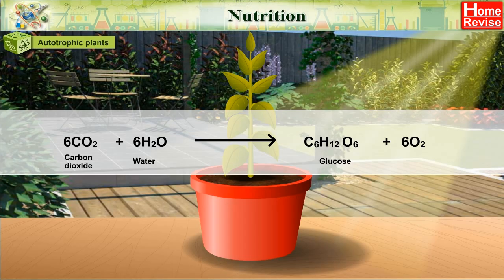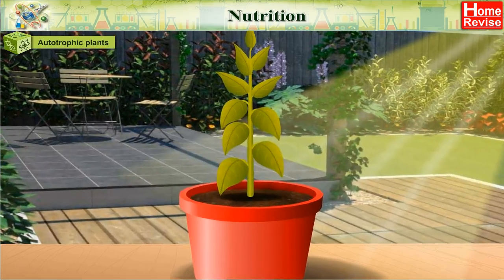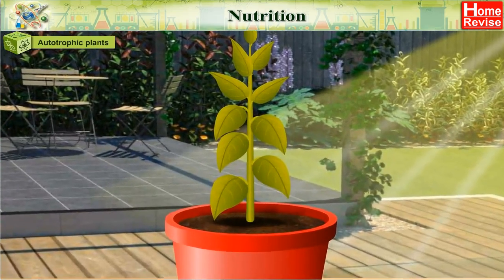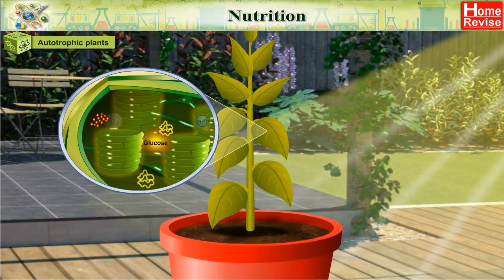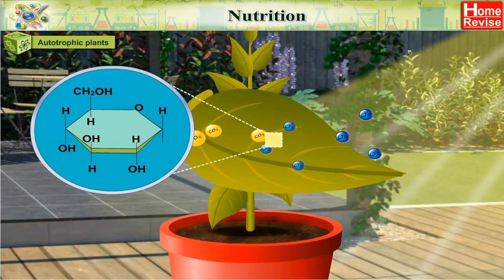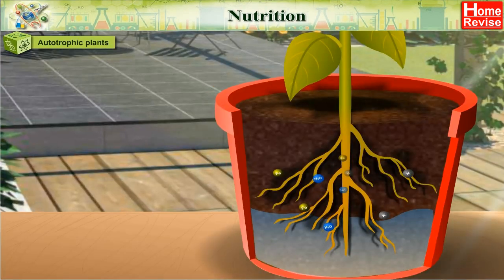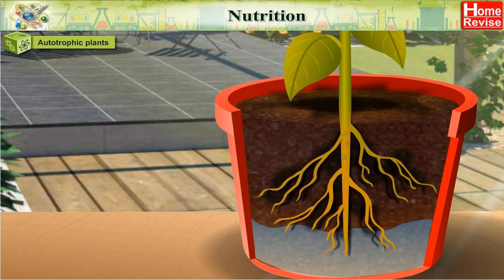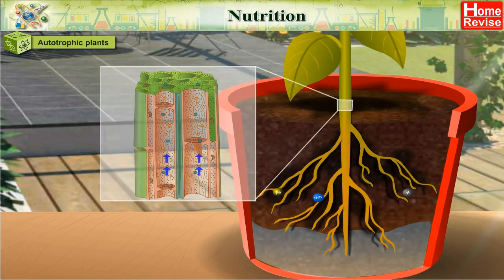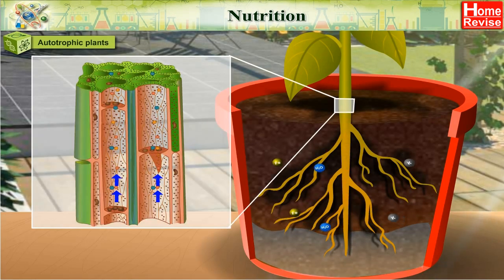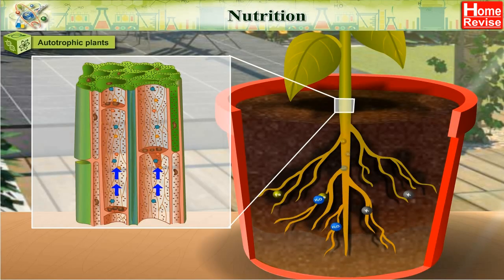The products are glucose (food) plus 6O₂ (oxygen). Plants convert light energy into chemical energy and store it in the form of food. Water, minerals, and salts are absorbed by roots from the soil, and the stem transports them up to the leaves.